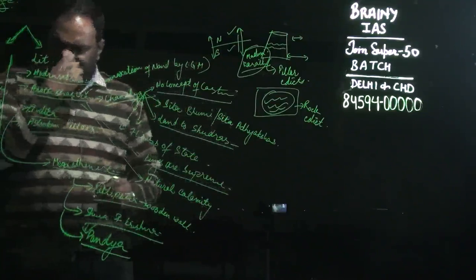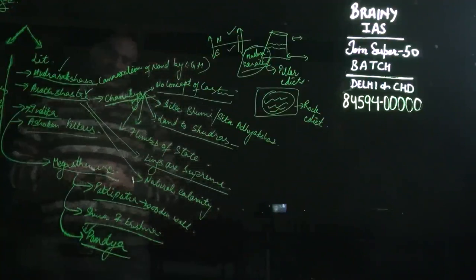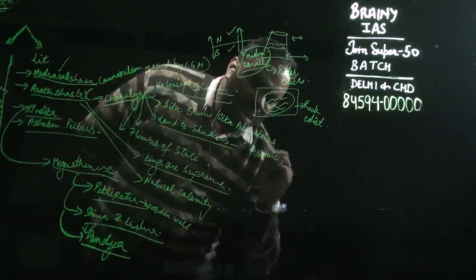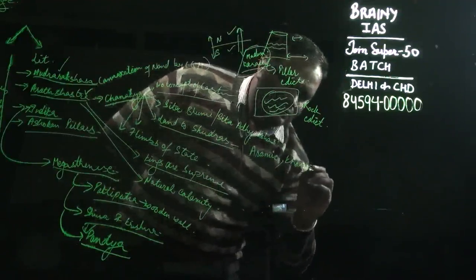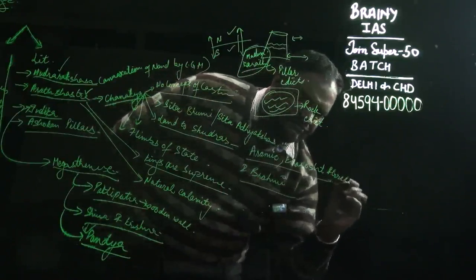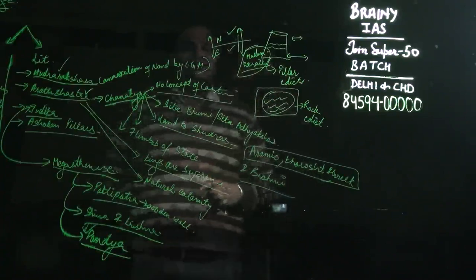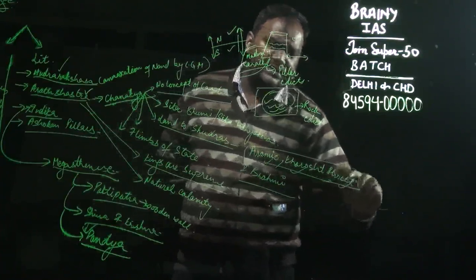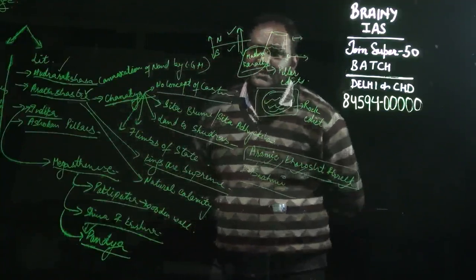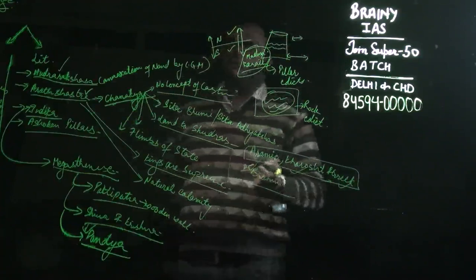The Ashokan pillars as a literary source — their edicts use scripts including Aramaic, Kharoshti, Brahmi, and Greek. In the Northwestern part of India, Kharoshti and Greek scripts were used because Greek influence was strong there. In the rest of India, Brahmi script was used because Brahmi was understood by the common man as well.